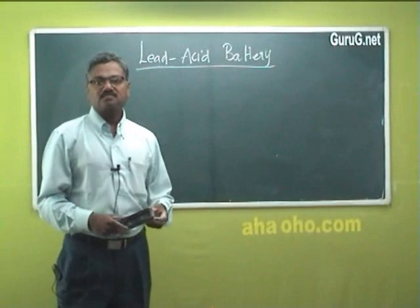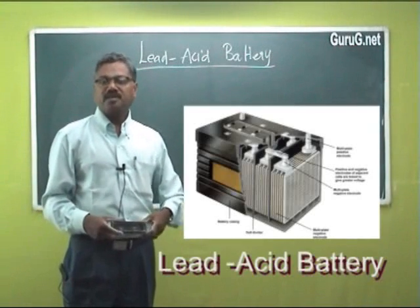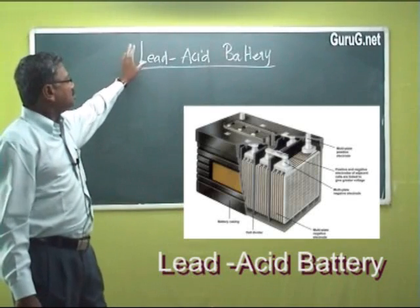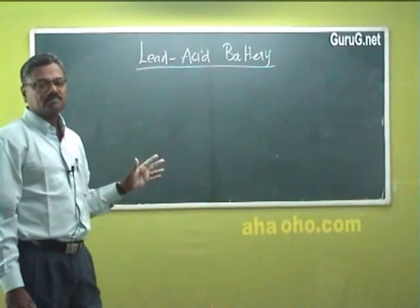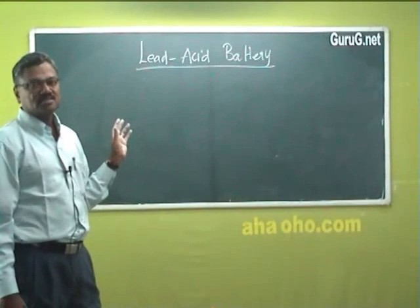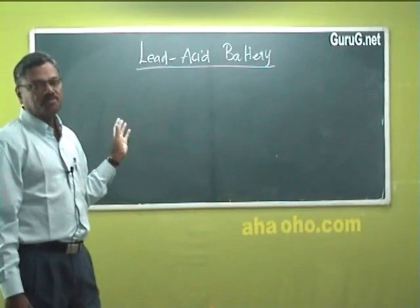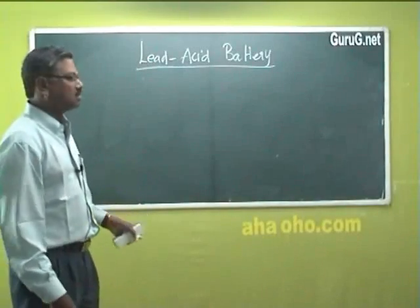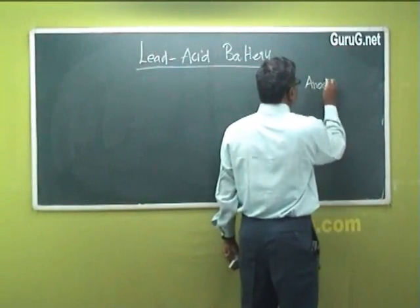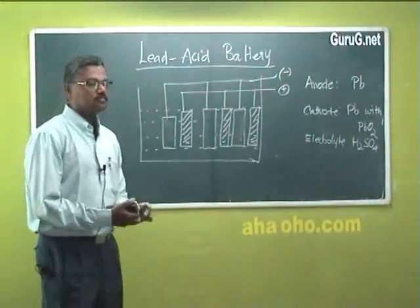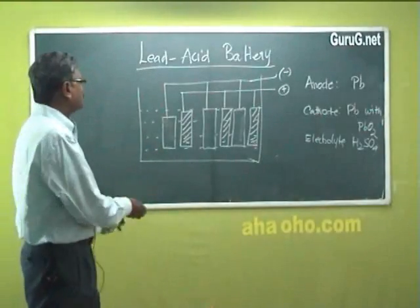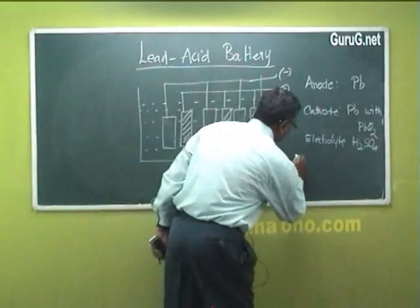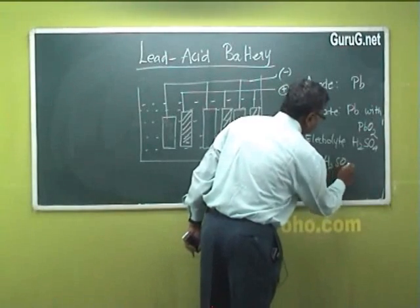Lead acid batteries are found in all automobiles — any automobile will make use of a lead acid battery. It is generally a 12-volt or 6-volt battery. Nowadays we also use them in UPS systems. In a lead acid battery, the anode, cathode, and electrolytic solutions are as follows.